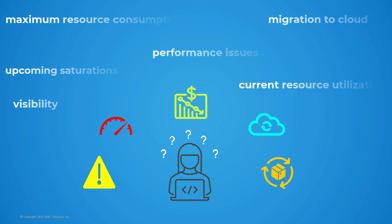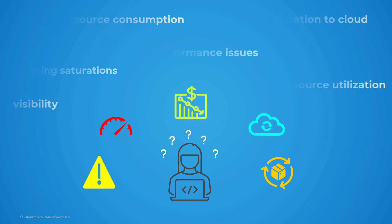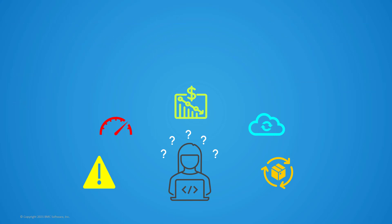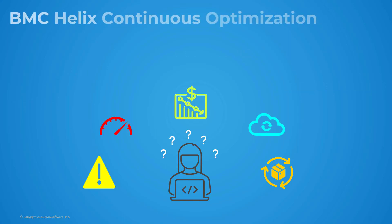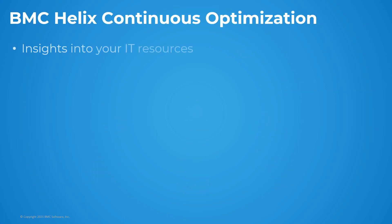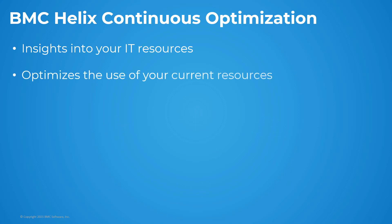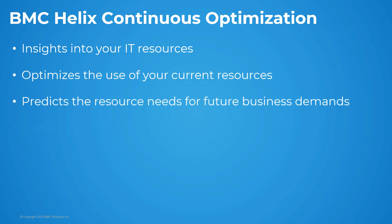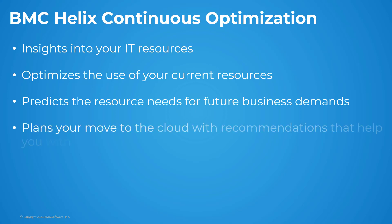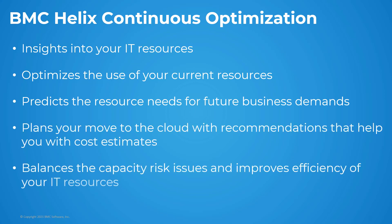We have got it all covered. Welcome to BMC Helix Continuous Optimization, a cloud-based solution that provides insights into your IT resources, optimizes the use of your current resources, predicts the resource needs for future business demands, and plans your move to the cloud. In short, everything that you need to manage capacity risks and improve the efficiency of your IT resources.